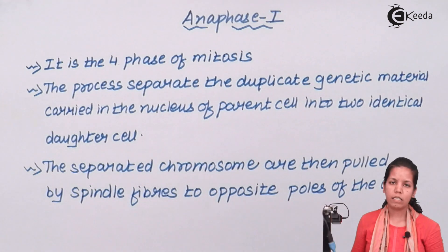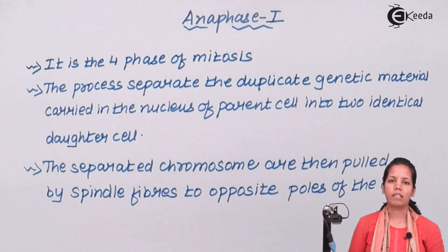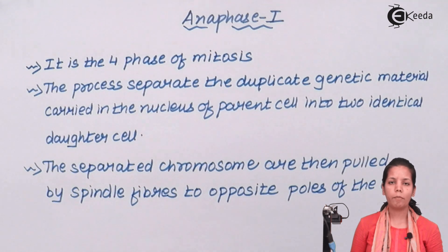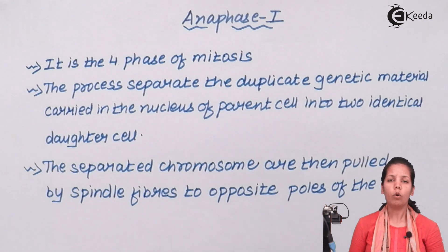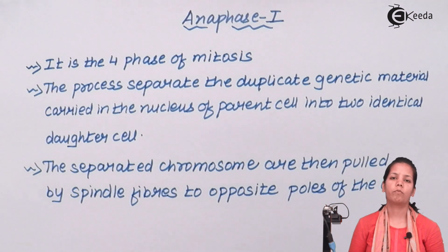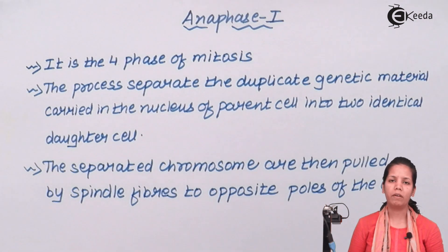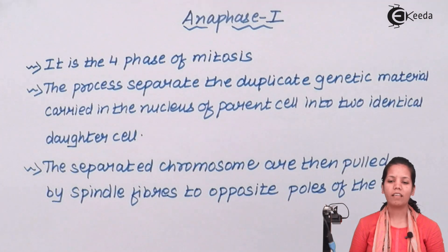So students, this was all about anaphase — how chromosomes are pulled apart and how the centromere may undergo crossing over of chromosomes. I hope students you are very clear with this concept. Thank you!